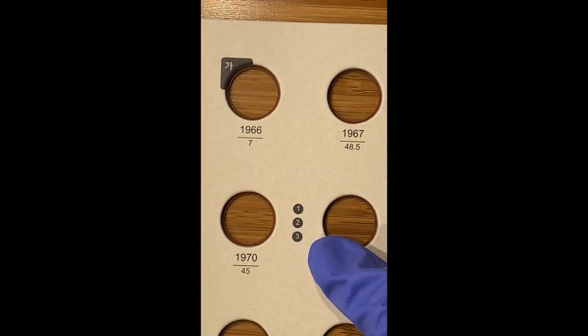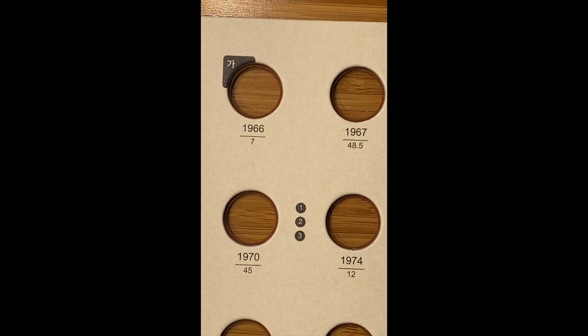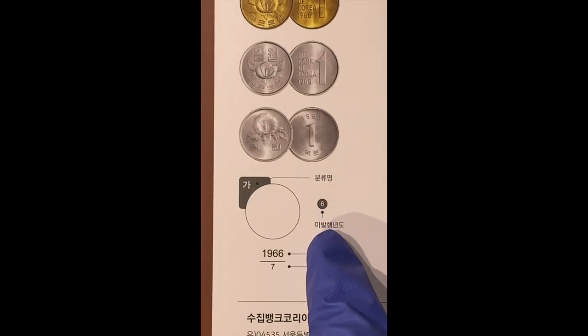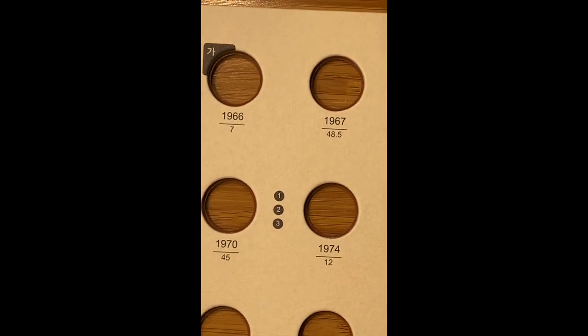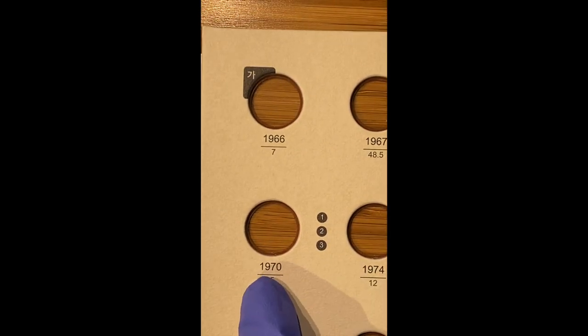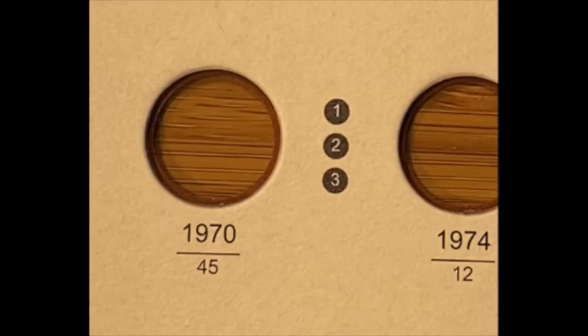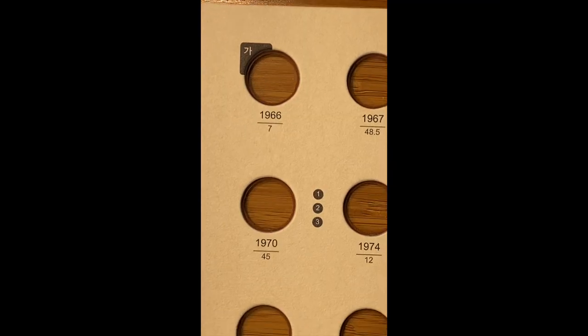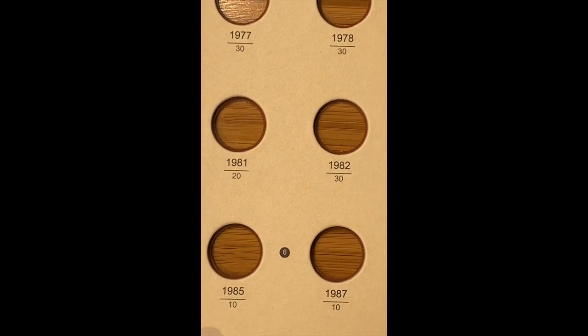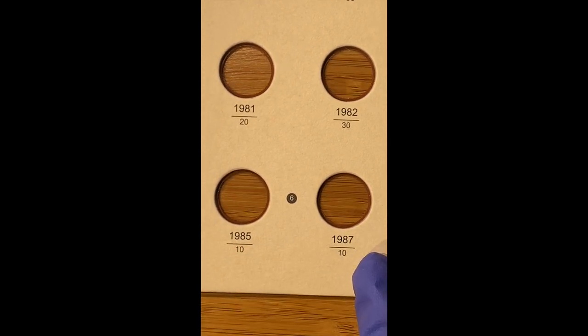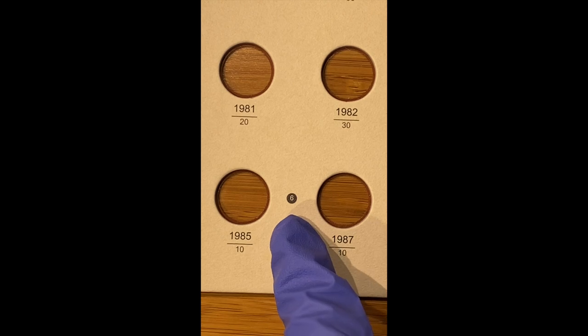Another thing you notice in this album is that they have these gray dots in between the holes for some of the coins. They describe these gray dots as the years in which the coin was not issued. So for example, you see 1970 and then there's a three-year gap between 1970 and 1974. They put these gray dots with one-two-three in between 1970 and 1974, indicating that these years, 1971, 72, and 73, were the years that this coin was not minted. You can see it here again between 1985 and 1987, with a gray dot with a six, indicating that the one-won coin does not appear with the year 1986 on it.